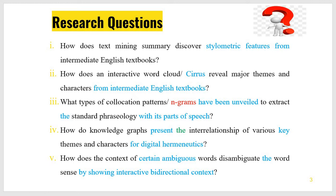For example, if you look at these five research questions: How does text mining summary discover stylometric features from intermediate English textbooks? How does an interactive word cloud reveal major themes and characters? What types of collocation patterns have been unveiled to extract standard phraseology? How do knowledge graphs present the interrelationship of various key themes for digital hermeneutics? How does context disambiguate word sense by showing interactive bi-directional context? Some research questions lead to qualitative research, some lead to quantitative research. Your research questions are very important because they lead towards your data and your research method.